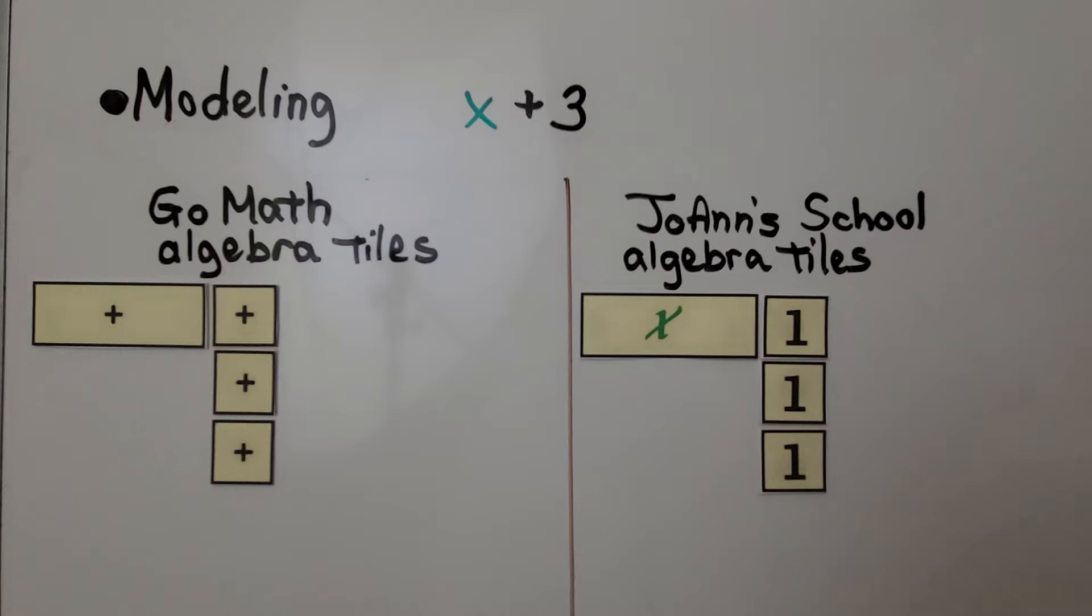If we're modeling x plus three, we have the rectangle and three squares. We have an x and three ones.